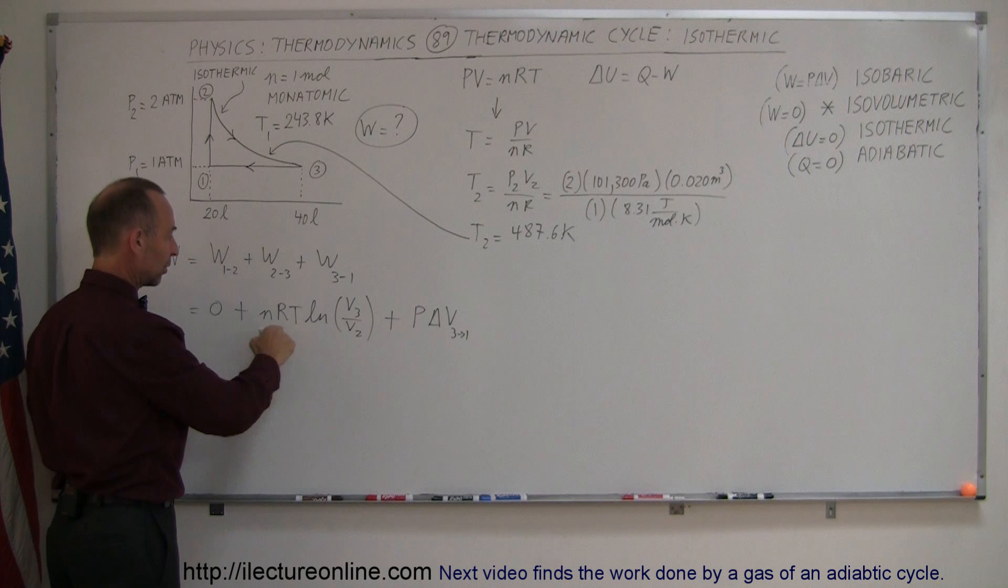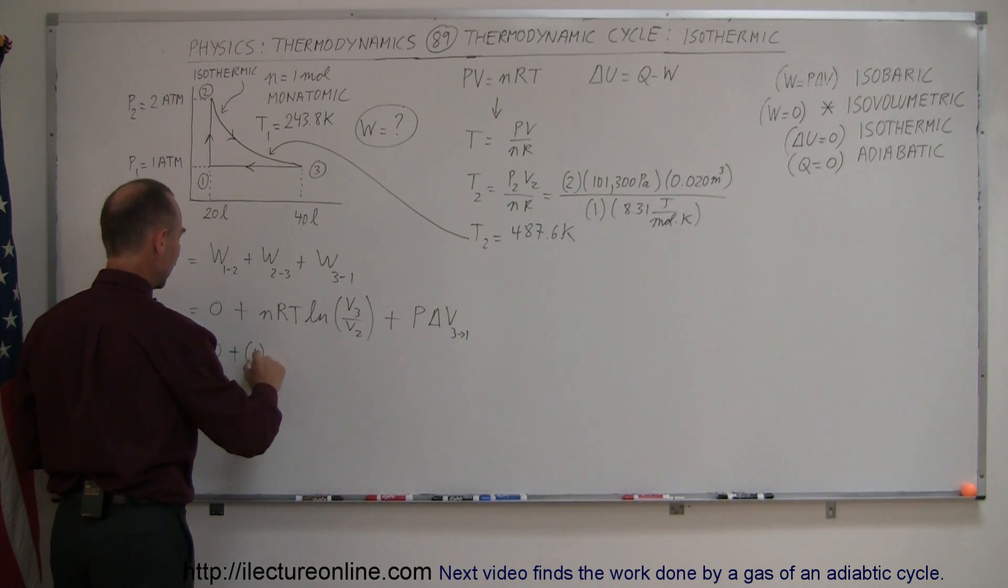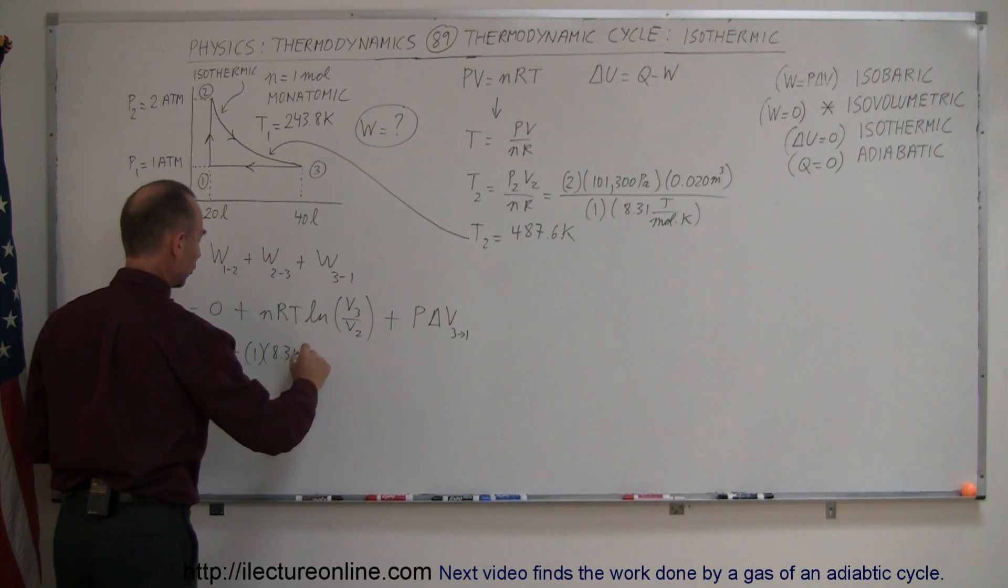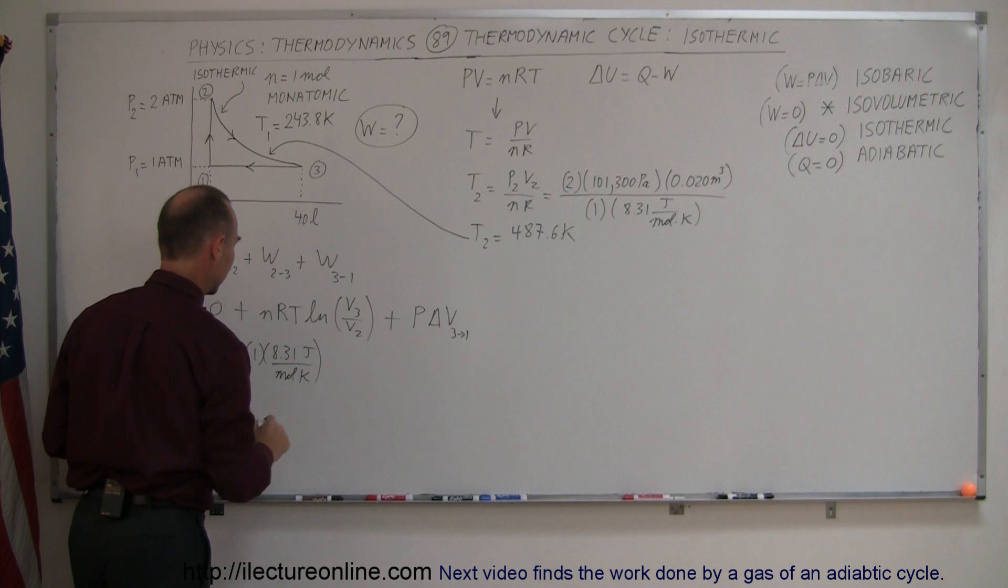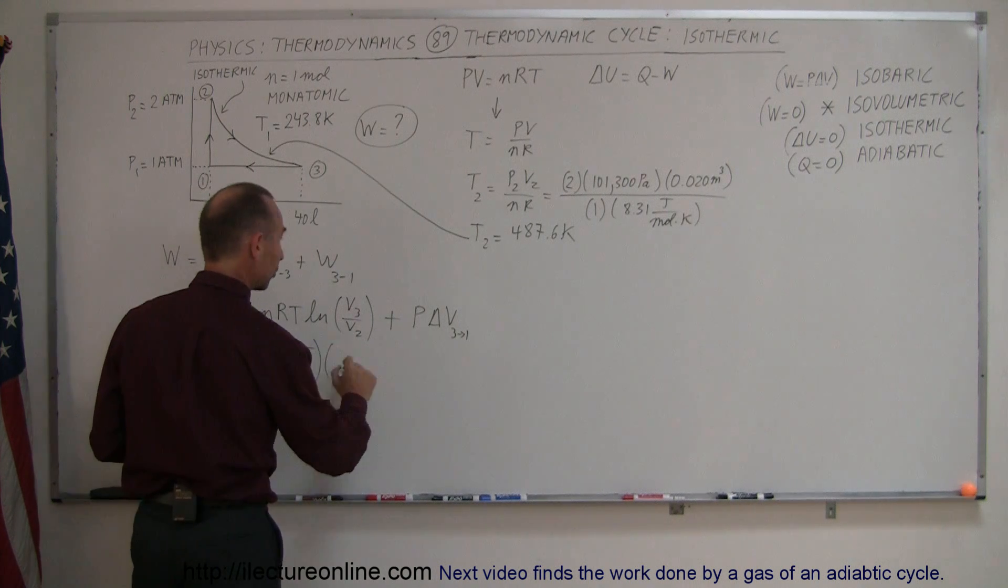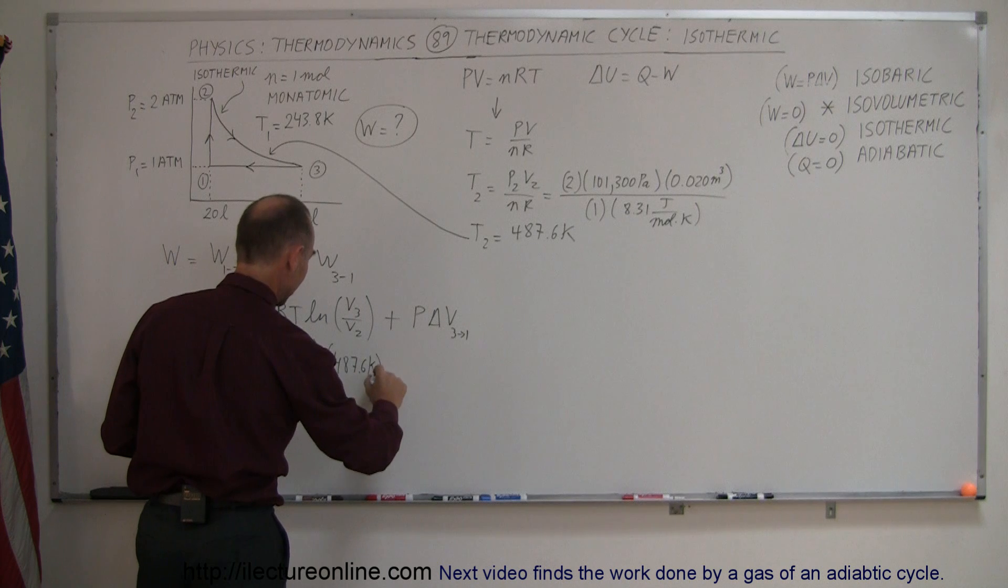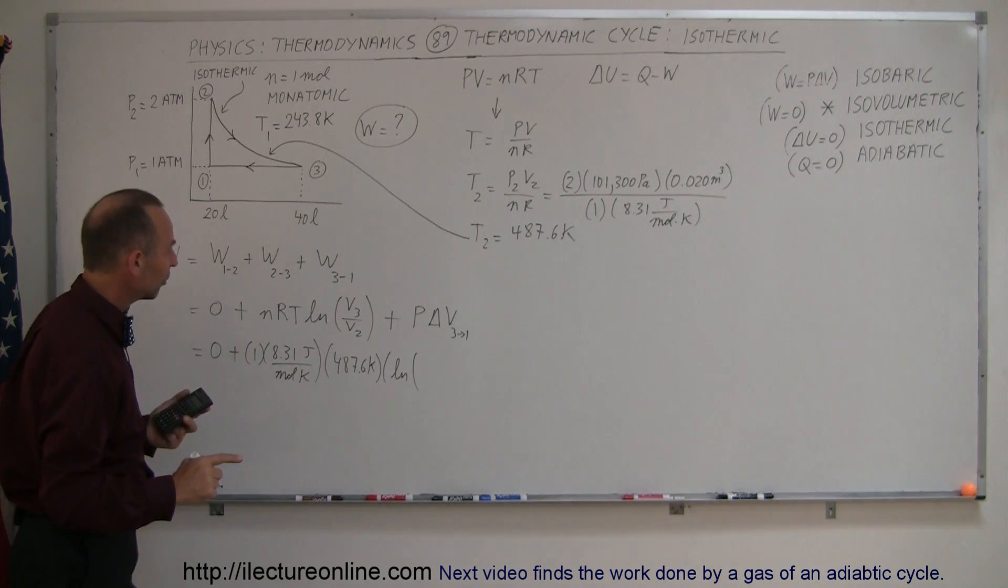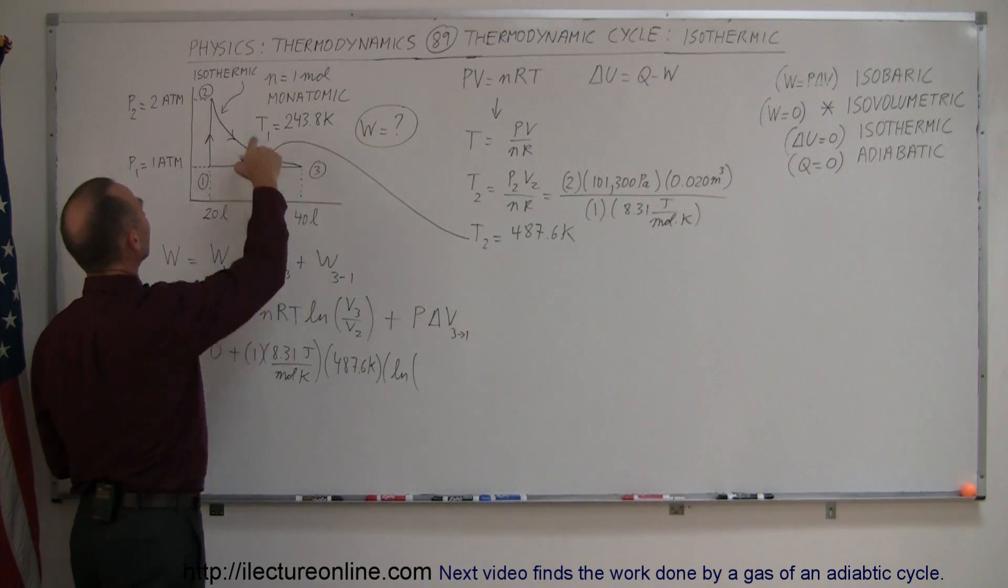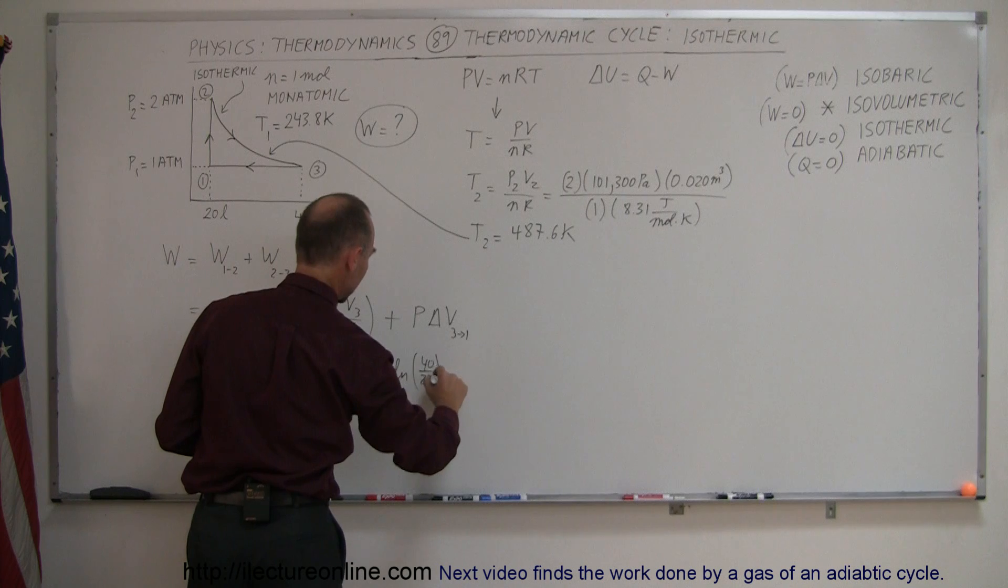Which means that's the temperature that goes in here. So we have 0 plus 1, 8.31 joules per mole times kelvin, times temperature, now we know that's 487.6 kelvin, times the natural log of the ratio of the end volume to the beginning volume. The end volume is 40 liters, beginning volume is 20 liters, so that would be 40 over 20, like so.